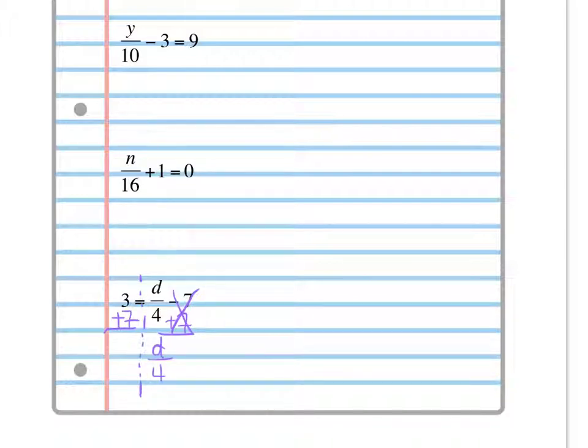Okay, 3 plus 7 will leave me with a 10, and I bring down the equal sign. Then I still have 4 attached to my variable D by division. That's what the fraction bar means, it means division. So the inverse of division is multiplication, so I'm going to multiply both sides by 4.